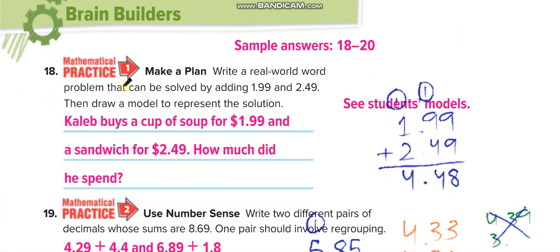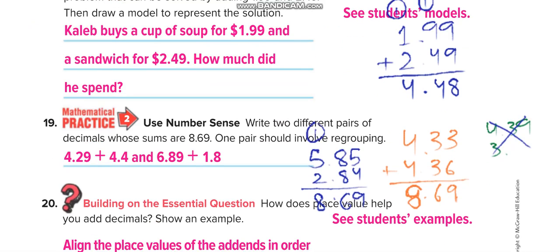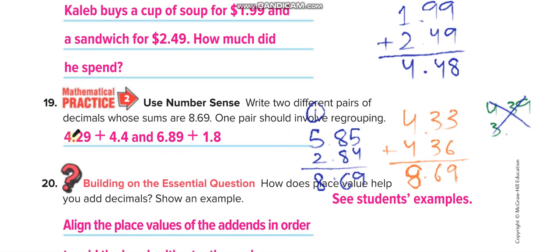Write a real-world problem that can be solved by adding this one. I gave you this example; you can give me another example in the comment box. Write two different pairs of decimals whose sums are this much. One pair should involve regrouping, this is the one with regrouping, and the other one without regrouping.